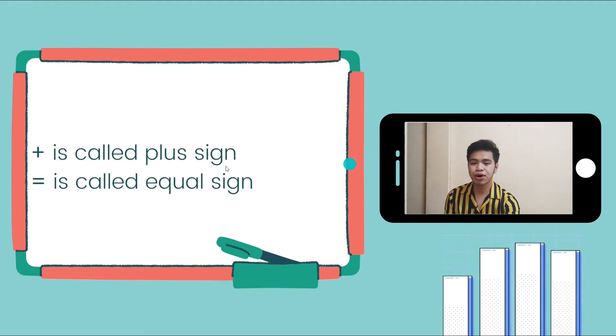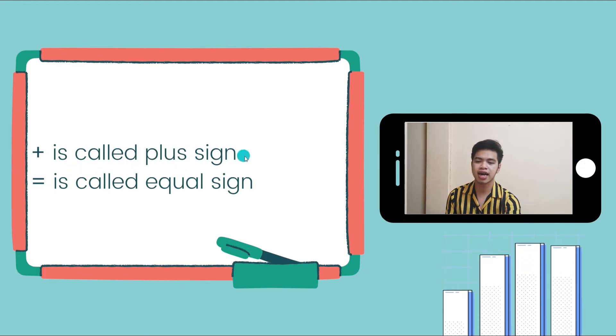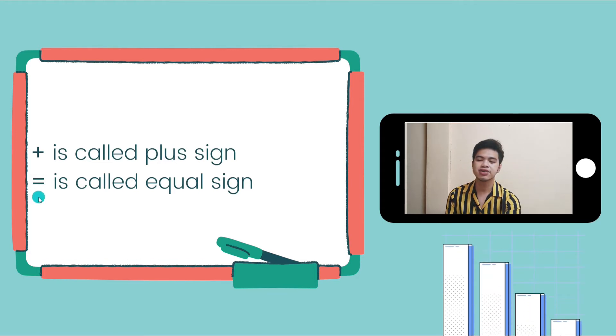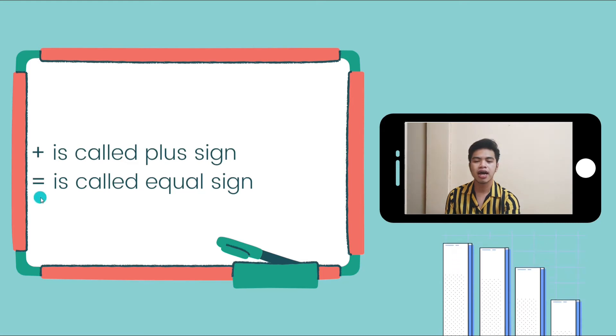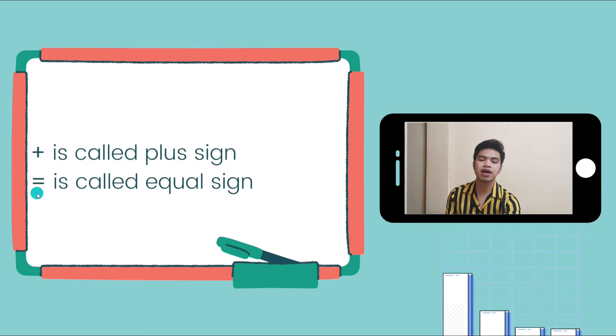This symbol is called plus sign. It represents addition. And then, this is equal sign. It represents the total of the addition equation. Equal sign represents equality, or that means that the numbers in the left are equal or has the same value with the numbers in the right.